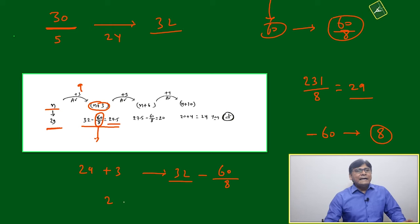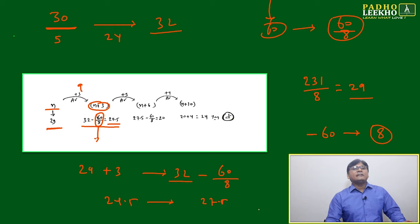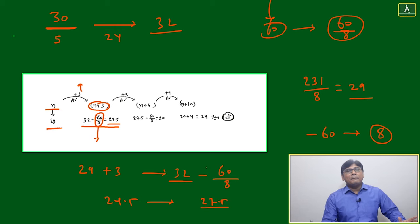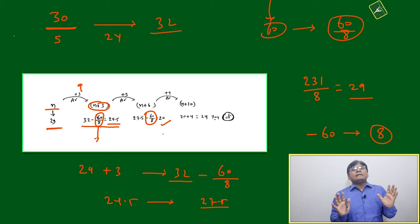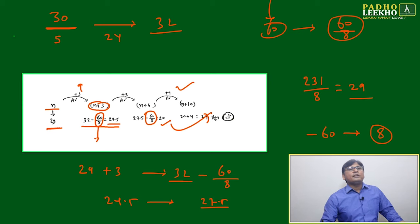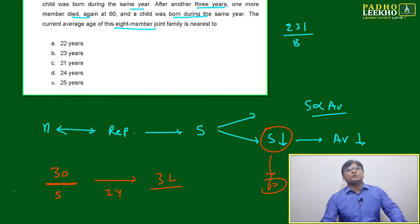Again, 24.5 after three years average ideally should become 27.5. But again same thing happening - one person dying, another taking birth, means 60 by 8 again will be reduced. 27.5 reduced by 60 by 8 will become 20. Now nothing is happening, by God's grace everything is fine. Then after four years, 20 will change to 24. After four years, 20 will change to 24, and 24 will become your answer.